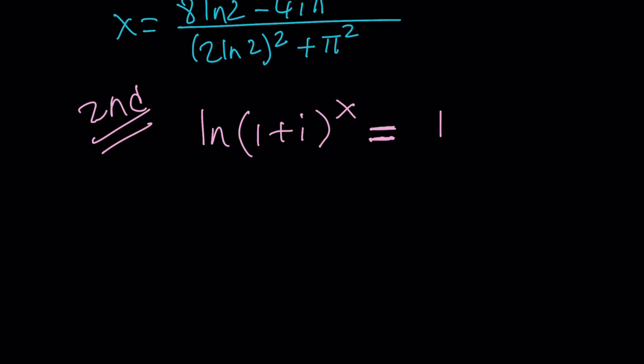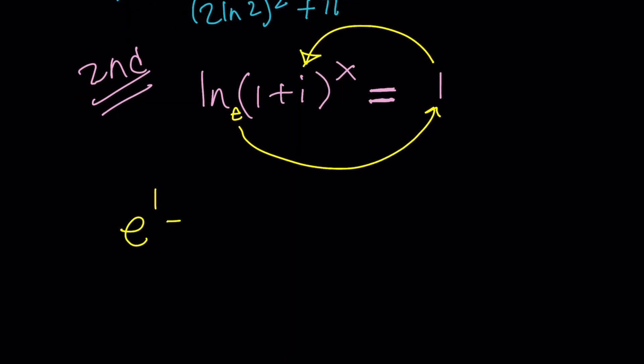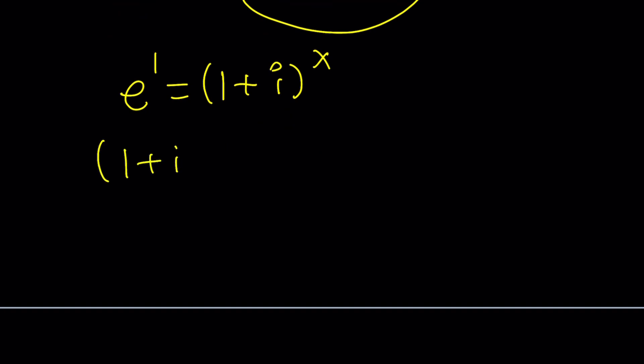The original problem was ln(1+i)^x = 1. For the first method, we brought the x to the front and divided by ln(1+i). But then we had to evaluate ln(1+i). We're going to do something similar, but this time I want to use the definition of logs. Remember, ln is base e. So if you use the definition, e^1 is going to give you this. e^1 equals (1+i)^x. So (1+i)^x = e. Conventionally, we want to leave x on the left.